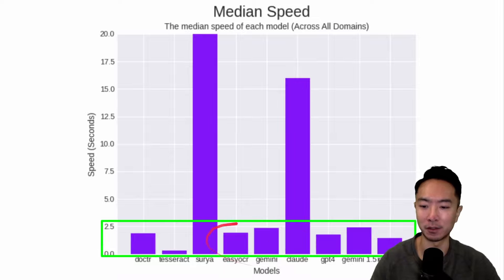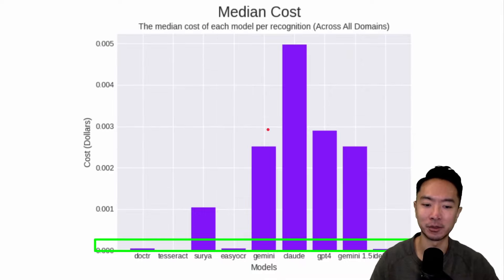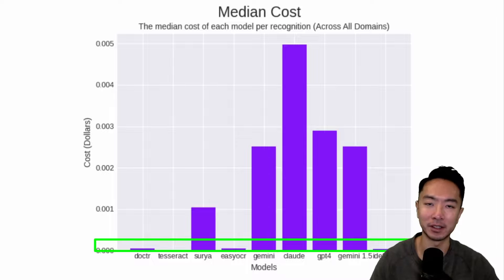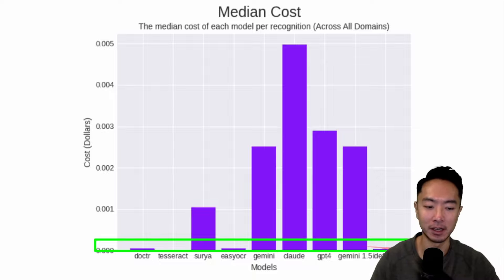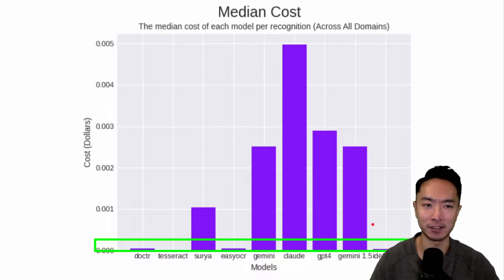There are a lot of models here that can run under about 2.5 seconds. Now let's look at cost. The cost really depends on how many times you're running your OCR model. If you're only dealing with a couple hundred, cost is probably not going to matter. But if you're running it in the millions, then every time you run it is going to matter. A lot of the LLM models have probably the highest cost, while many others like Easy OCR don't cost much. IDFX is probably one of the lowest-cost LLM options. So figure out if cost is a concern for you.